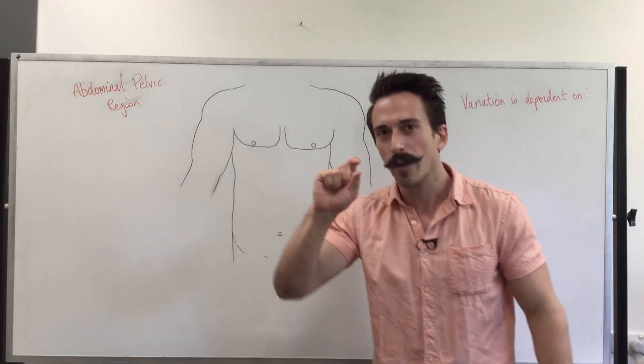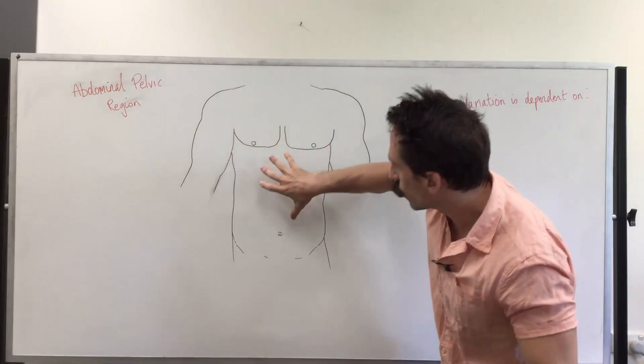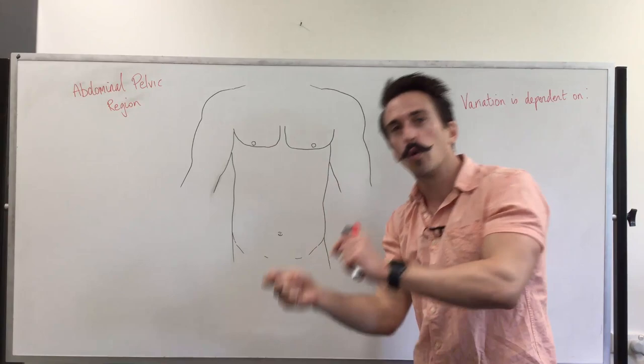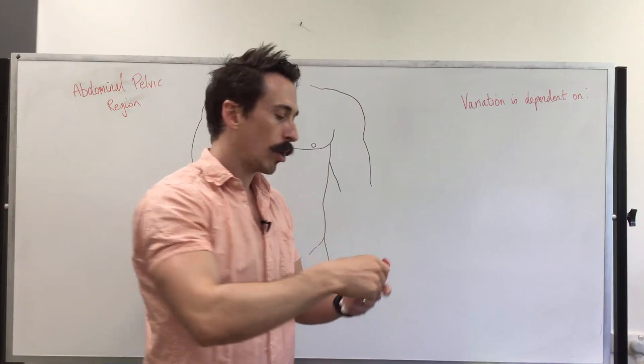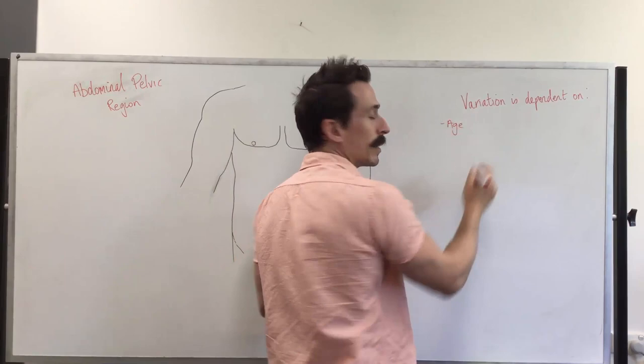These lines that we're about to draw up, even though they sound very specific and exact, they are arbitrary lines, and the intra-abdominal and pelvic organs are variable. What can result or what can be the cause of the variability are the following: variation on the position of these organs can depend on the individual that you're assessing, their age,